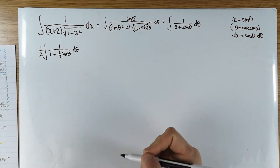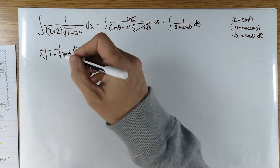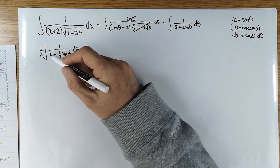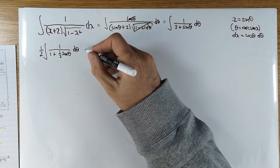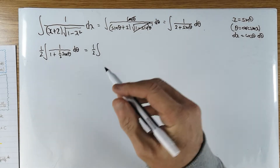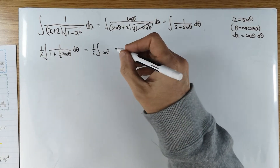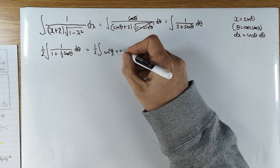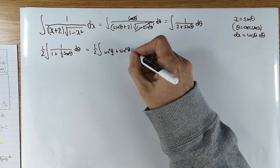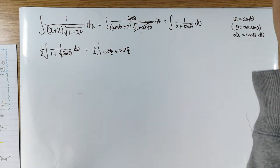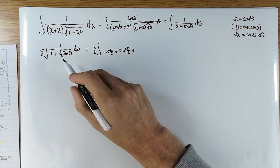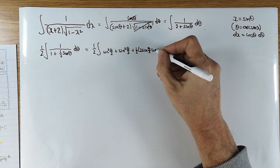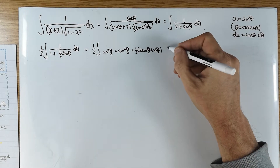I'm going to use half-angle identities for sin θ, writing sin θ as sin(2 · θ/2). The 1 in the denominator I'll write as cos²(θ/2) + sin²(θ/2). So the denominator becomes cos²(θ/2) + sin²(θ/2) plus a half times 2 sin(θ/2) cos(θ/2), with dθ on the side. The two times a half cancels.